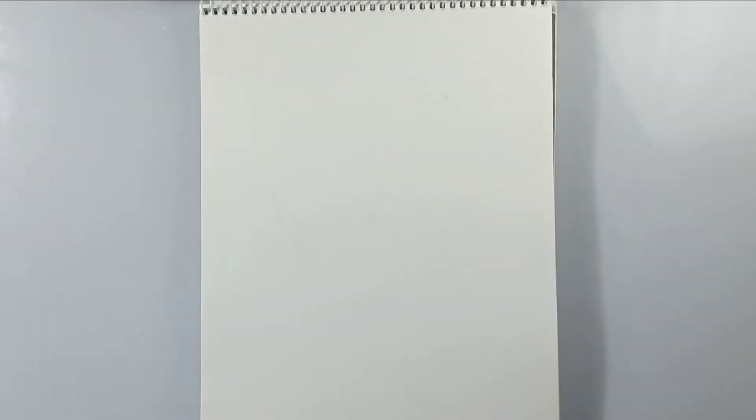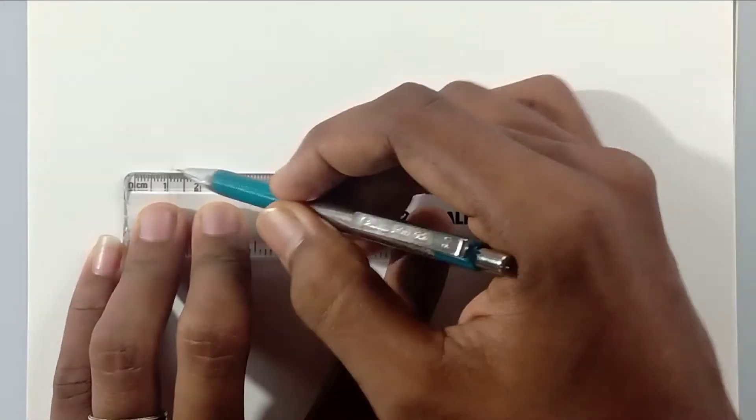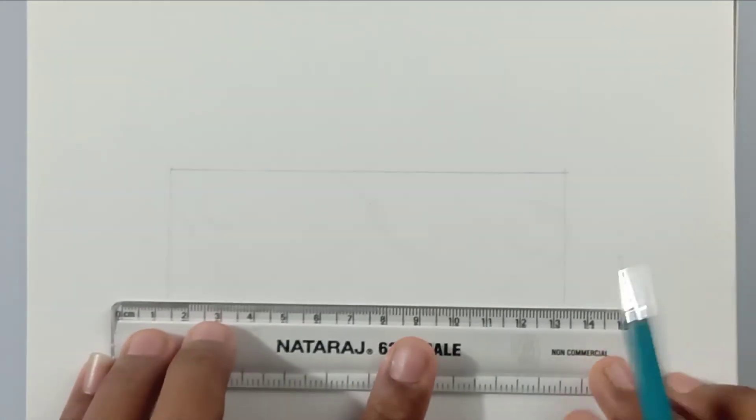I'm going to use this 0.5 mechanical pencil for drawing outlines and a ruler. First, draw a rectangle in the length which you want to draw a mustache and divide it into two parts exactly in the middle. Start drawing like this.